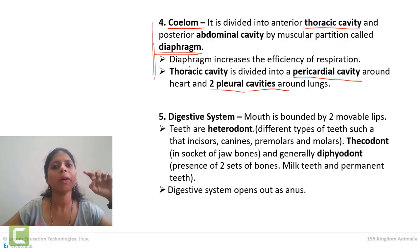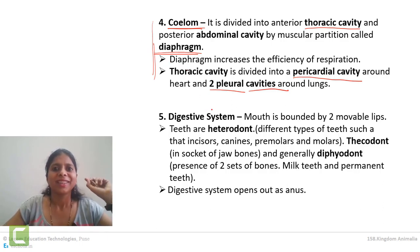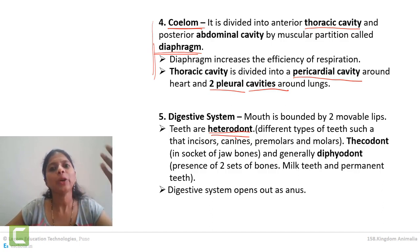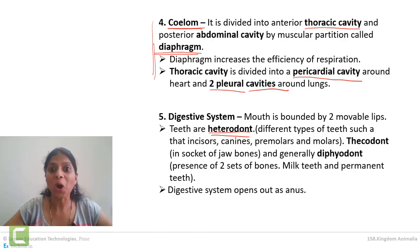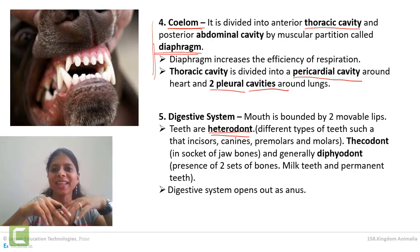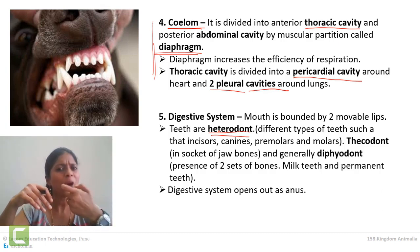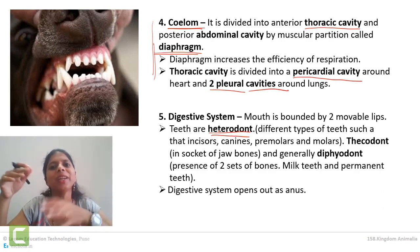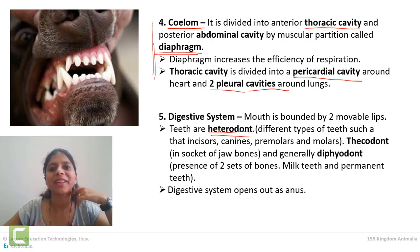When we talk about the teeth of mammals, a few important terms need to be remembered. First, teeth in mammals are called heterodont — meaning different types of teeth are present. Canines are there, molars are there, premolars are there. All teeth are not the same shape and size. That's why they are called heterodont. Second, they are thecodont — meaning teeth are embedded in the jaw bones. Their roots go into the jaw bones, not just superficially placed.